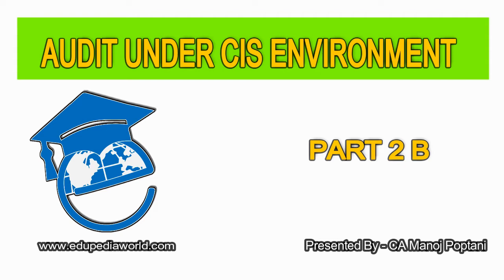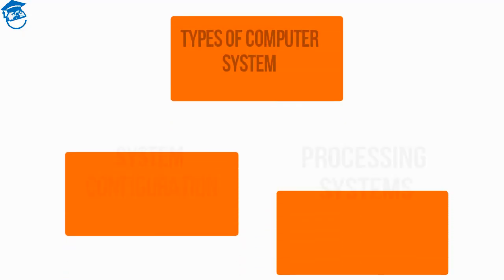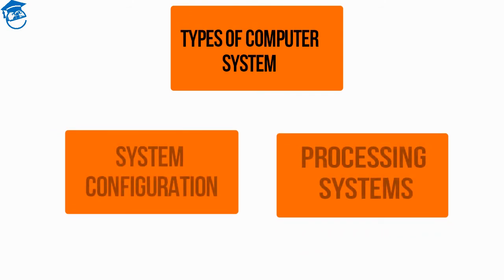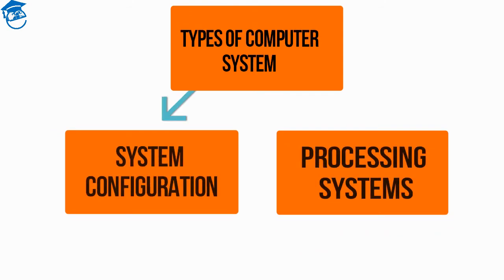Fasten up your seatbelts — we are about to take on the second presentation with the first topic of the day, and that will be the types of computer systems. Number one is system configuration and number two are processing systems. These are the two different types of computer systems, and I'll explain both with complete clarity.